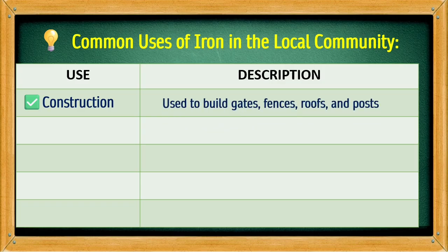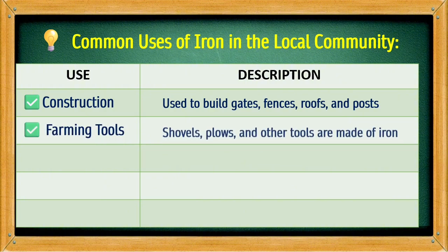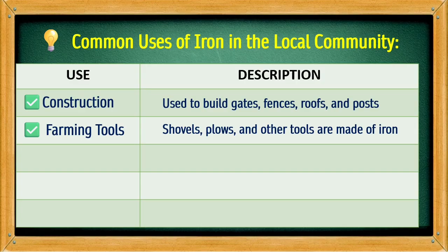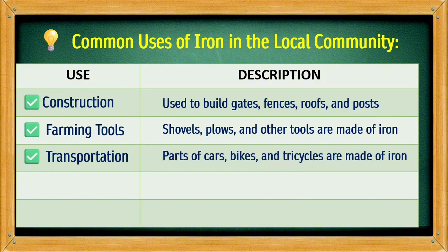Common uses of iron in the local community: Construction — used to build gates, fences, roofs, and posts. Farming tools — shovels and other tools are made of iron. Transportation — parts of cars, bikes, and tricycles are made of iron.